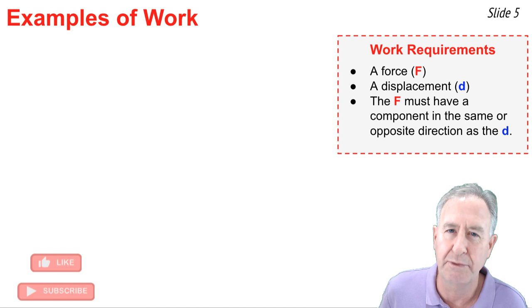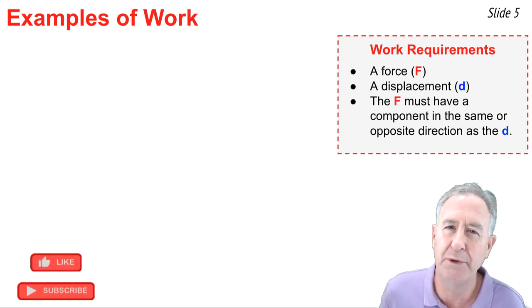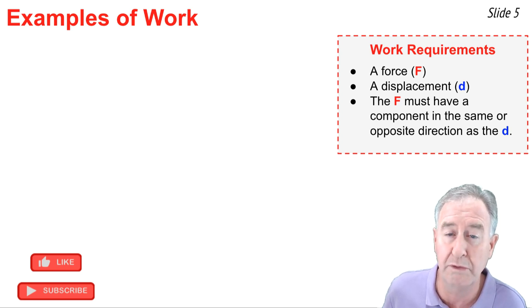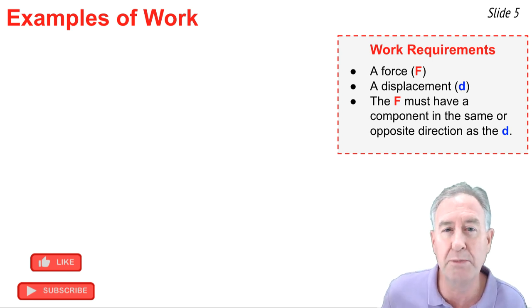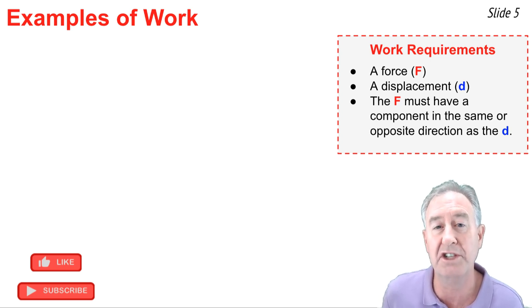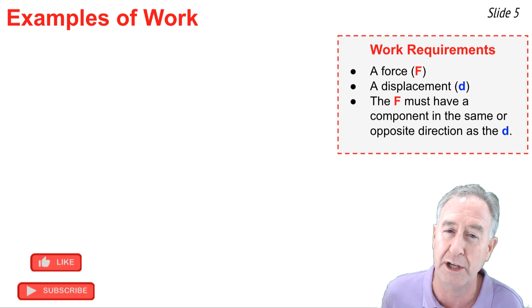Let's talk about some examples of work, but before we do, let's review the requirements. There must be a force acting upon the object, and the object must move or be displaced. And there must be some component of the force or part of it that's directed either in the same direction or the opposite direction as the displacement.